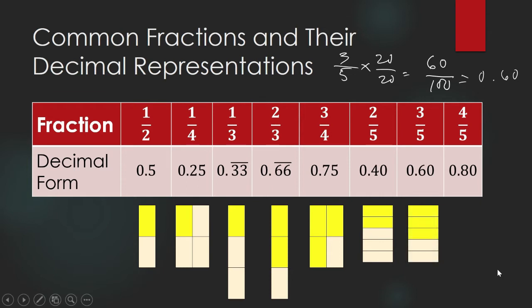And 4 over 5, you know that it is 0.80 or 80 hundredths. So, these are common fractions and their decimal representations. Right away, you must be able to recognize that these are their equivalent decimal numbers.